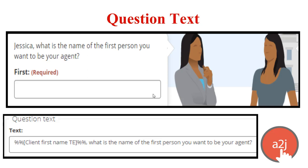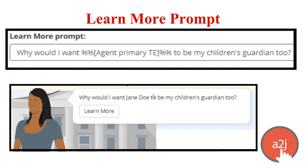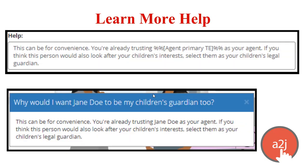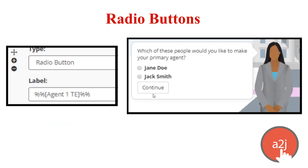Here is an example of it in question text, which we've already seen. In a learn more prompt, the end user is thinking a question like, 'Why would I want whoever they named as their primary agent to be their children's guardian too?' You can use it in learn more help to call up information they've given you to personalize the guide avatar's response. In radio buttons, for example, a question asks which of these people they'd like as their primary agent — calling up the actual names entered as agent one and agent two, making it easier for the end user to remember.